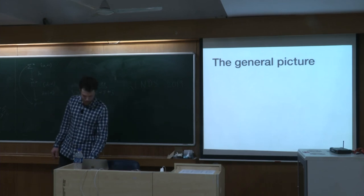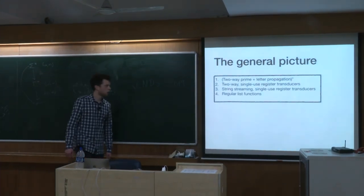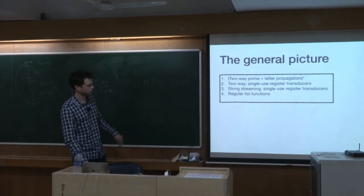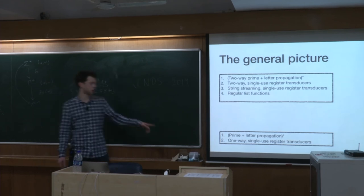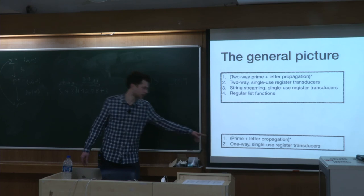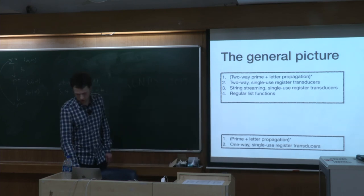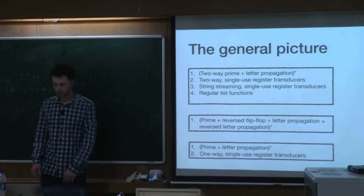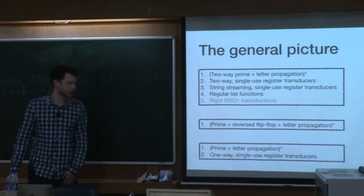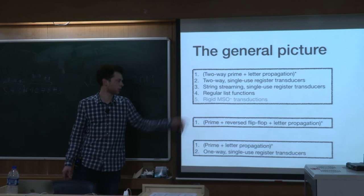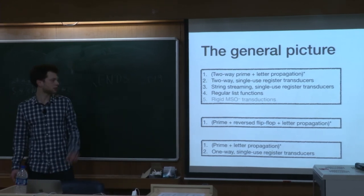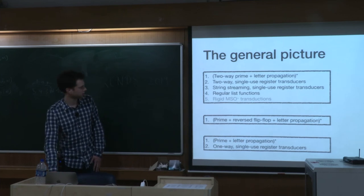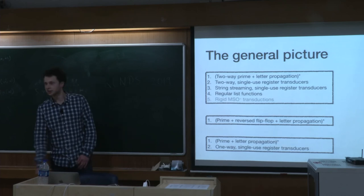To finish with the general picture: we have one class of transductions from the previous slide. We have the one-way transducer, which coincides with the prime functions and letter propagation. This corresponds to sequential functions. There is also the equivalent of rational functions and the equivalent of regular functions. What might also be very interesting to investigate is how rigid MSO transductions with the data comparison relation fit in — we are not sure yet, but it looks promising. Thank you very much for listening.